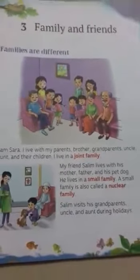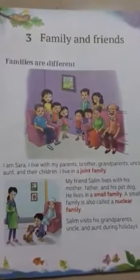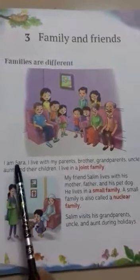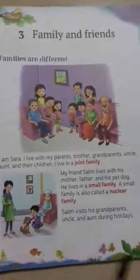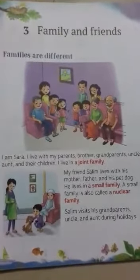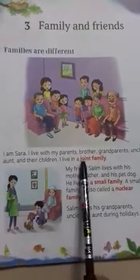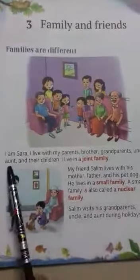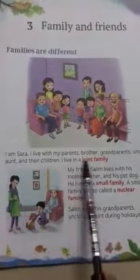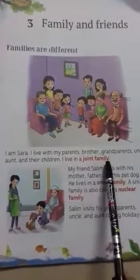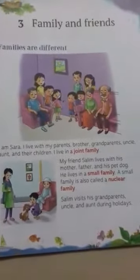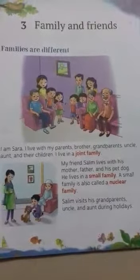Now we will have a look at our book. In your book, there are three types of families, and here we can see that. We have Sarah's family, Salim's family, and Minnie's family. We have the picture of their families. Sarah lives in a joint family, and she has parents, grandparents, brother, uncle, aunt and their children. As you know, joint family means where many people live all together in the same house. So she lives in a joint family, and joint family can also be called big family.